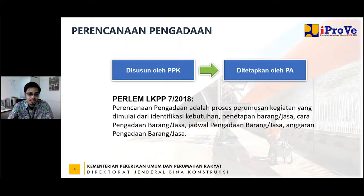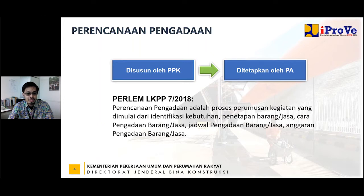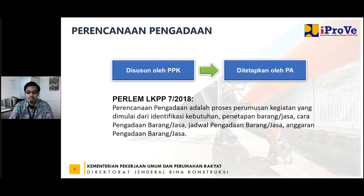Ini adalah proses umum perencanaan pengadaan yang menjadi acuan bagi perencanaan pengadaan untuk pekerjaan DB. Ada pertanyaan kemarin terkait dengan perencanaan pengadaan — ini siapa yang melakukan? Proses perencanaan pengadaan melibatkan setidaknya dua pelaku pengadaan, yaitu PPK dan PA. Penyusunannya dilakukan oleh PPK: PPK yang membuat identifikasi kebutuhan, mengidentifikasi cara pengadaan, rencana jadwalnya. Tapi pada proses akhirnya, dokumen perencanaan pengadaan akan ditetapkan oleh PA.